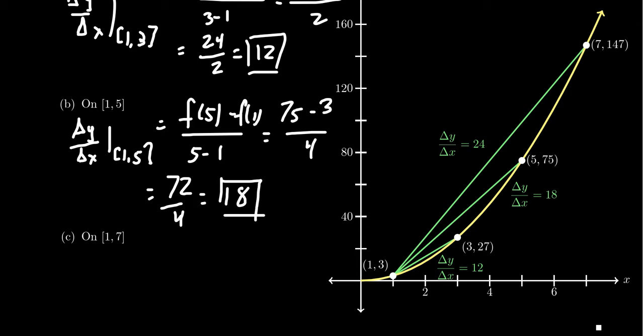So on average, the rate of change as you go from 1 to 5 would be 18 y's per x.